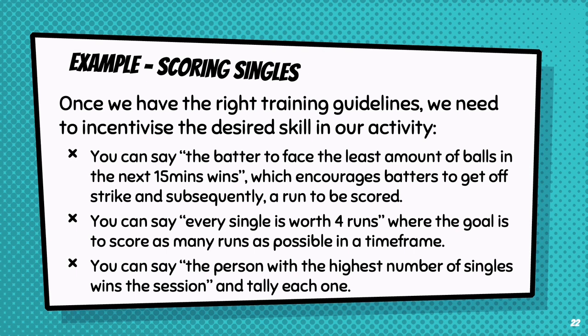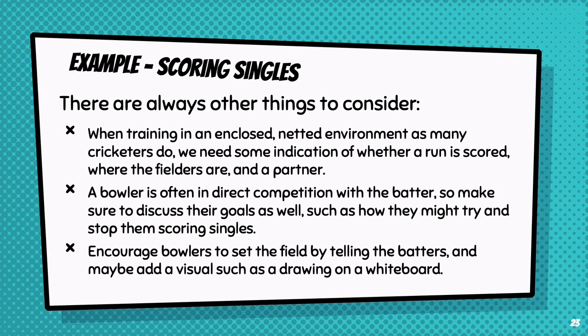If you can answer those questions, they serve as a nice guideline for your training design. The next step is to incentivise the desired skill within our guideline. Some examples: the batter to face the least amount of balls in the next 15 minutes wins, which encourages batters to get off strike. Every single is worth four runs, where the goal is to score as many runs as possible in a time frame. Or the person with the highest number of singles wins the session — tally each one.